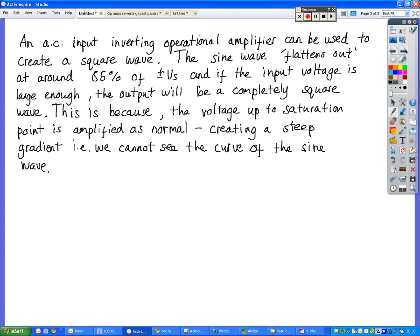That's because the voltage up to saturation is amplified as normal, which creates a really steep gradient, and otherwise we can't see what the curve of the sine wave is.